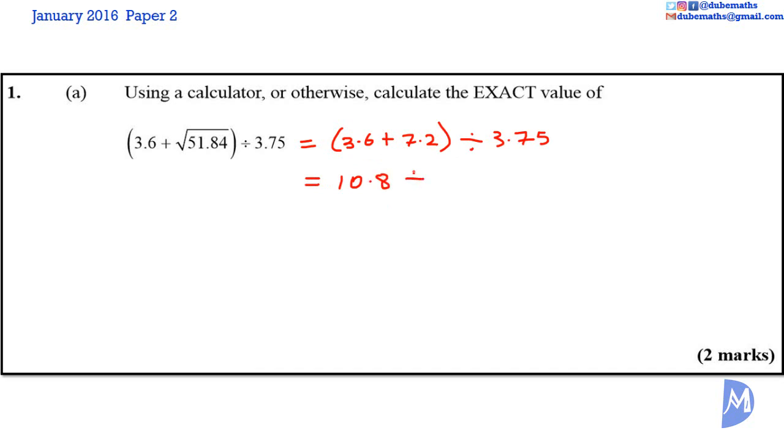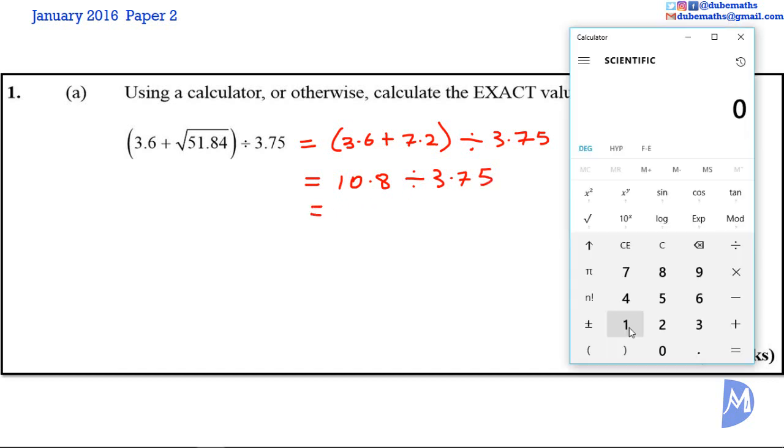10.8 divided by 3.75. And we'll get 10.8 divided by 3.75. It's equal to 2.88.